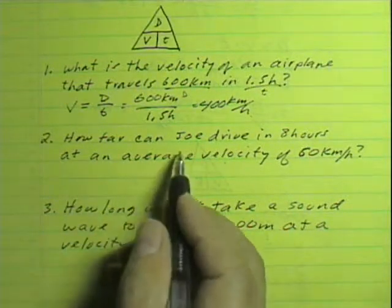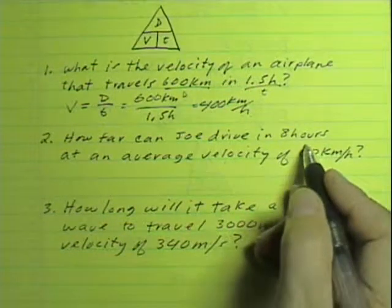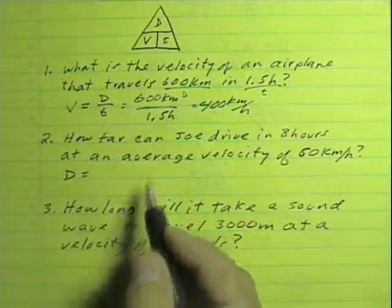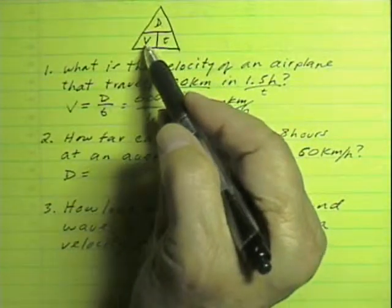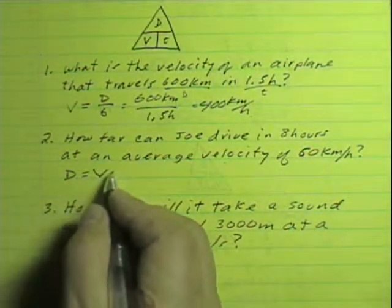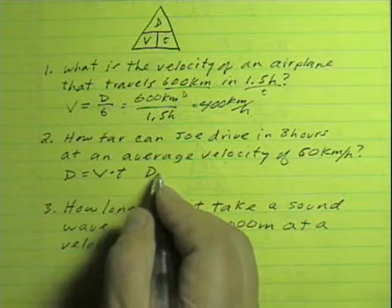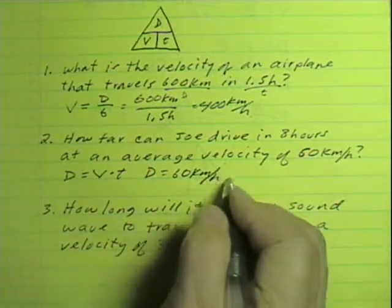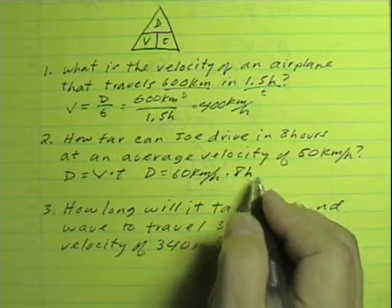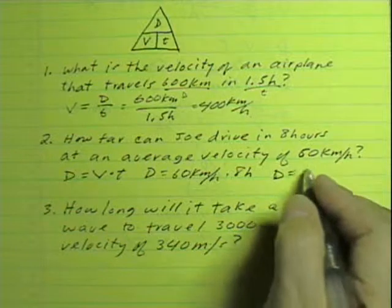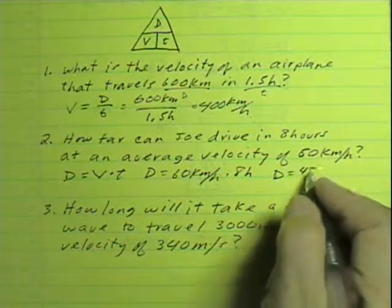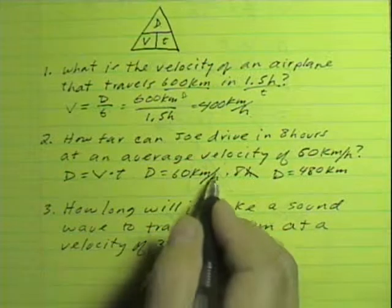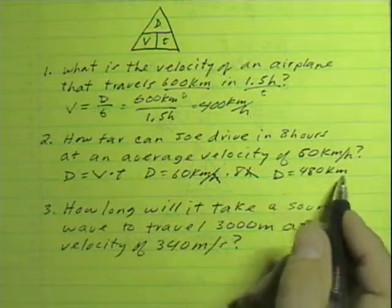In this situation we have the time and the velocity, and we're trying to find the displacement. According to the magic triangle, displacement equals velocity times time. The displacement would be 60 kilometers per hour times 8 hours. The hours factor out, and that works out to 480 kilometers.